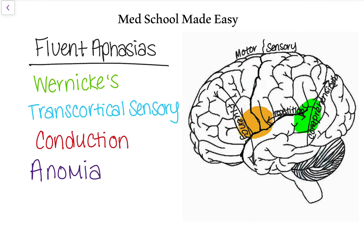We are going to talk about aphasias. Aphasias most commonly are associated with stroke. They can be associated with basically any sort of brain injury, but stroke is mostly where you'll be tested. The two biggest aphasias are Wernicke's aphasia, which we'll talk about in this video since we'll be talking about fluent aphasias, and then in non-fluent aphasias we'll talk about Broca's. Those are the two you'll get tested on most often, so make sure you know those.